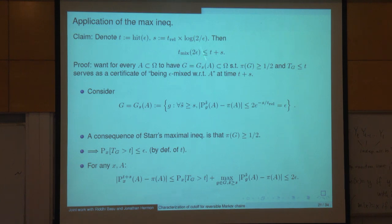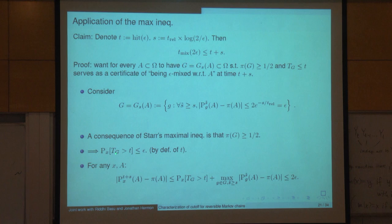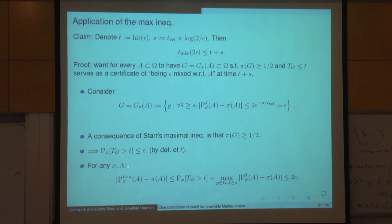I've chosen the parameters so that Star tells us that π(G) is at least one-half. If you believe that for a moment, then by the definition of T = hit(ε), we know that the probability we fail to hit this set G by time T is at most ε.